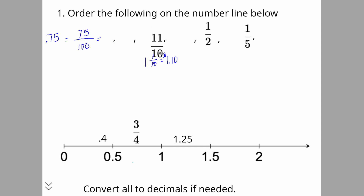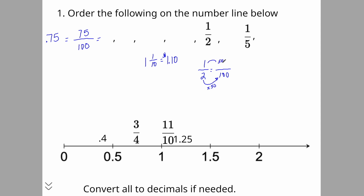So 11 over 10 is going to be less than 1.25, but greater than one. Now one half — you can think of it as one divided by two. If you don't know this one easily, try to convert it out of a hundred: two times 50 gets us 100, so one times 50 is 50 over 100, which is 0.50. One half is exactly equal to 0.5.